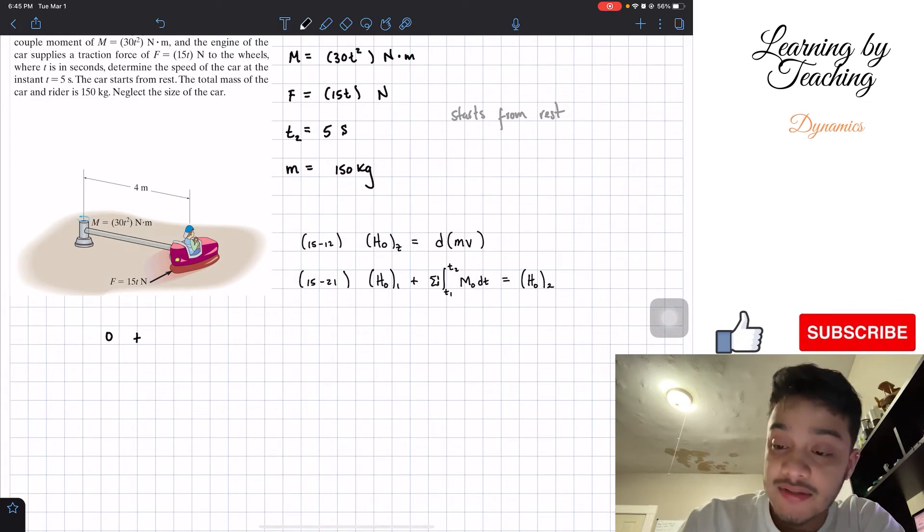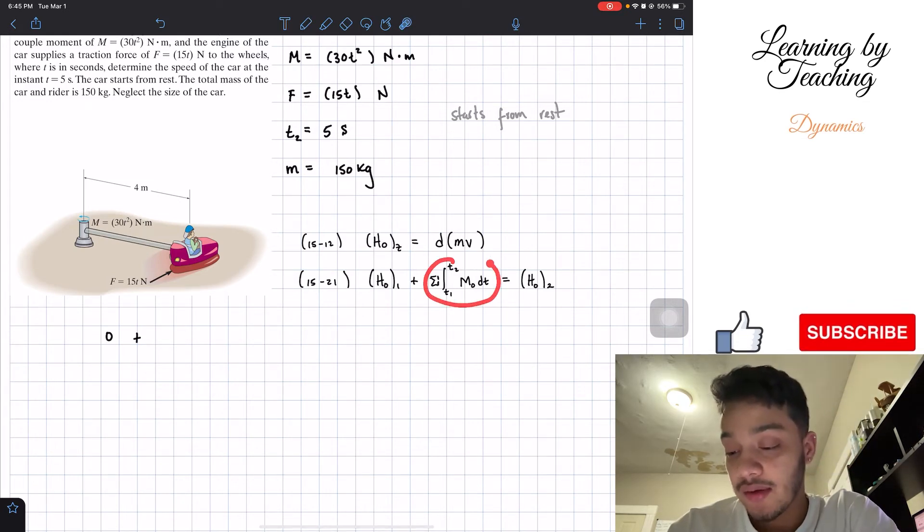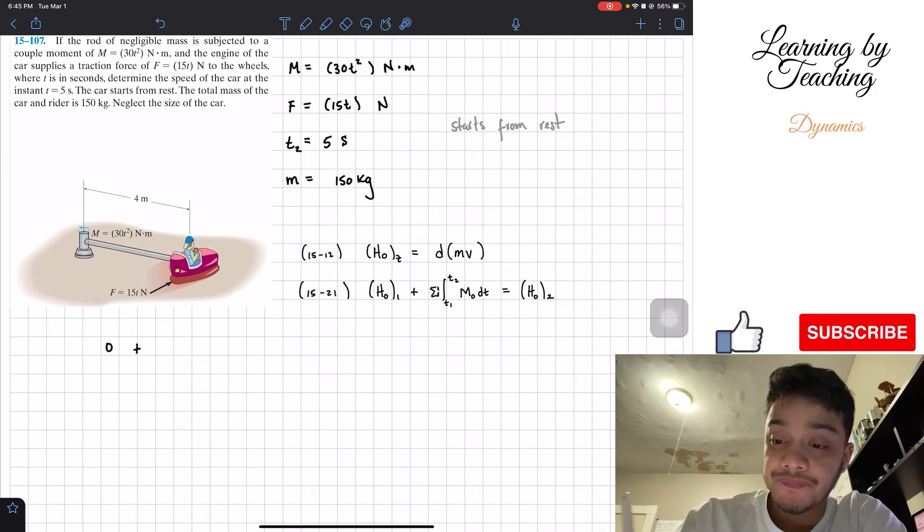Then we have plus and we need to take into account the angular impulse, which is going to be the summation of all the integrals from t₁ to t₂ of the moments. So we have a moment here described by the figure. We will have then integral from time one, which is zero, to time two, the time that we're interested in, five seconds. And we're taking the integral of the moment, which is 30t² dt.